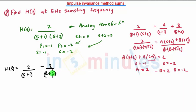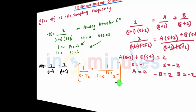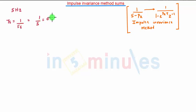Now we will obtain the Z-transform using the impulse invariance transformation. The general formula is: 1/(s minus pk) maps to 1/(1 minus e^(pk*T) * z^(-1)). We will solve using this formula. The sampling frequency is given as 5 Hz, so the sampling period T = 1/fs = 1/5 = 0.2 seconds.